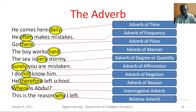The sea is very stormy — here, very is an adverb of degree or quantity. Surely you are mistaken — here, surely is an adverb of affirmation. I do not know him — here, not is an adverb of negation. He therefore left school — here, therefore is an adverb of reason. Where is Abdul? — here, where is an interrogative adverb. This is the reason why I left — here, why is a relative adverb.